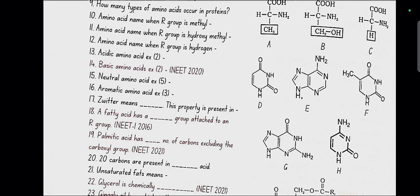Acidic amino acid examples: glutamate and aspartate. Basic amino acid examples: lysine and arginine. Neutral amino acid examples: valine, glycine, alanine, leucine, isoleucine.